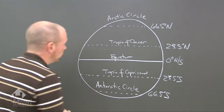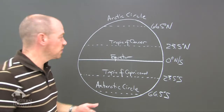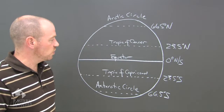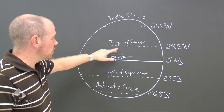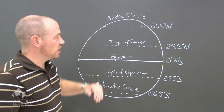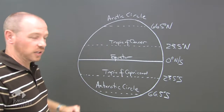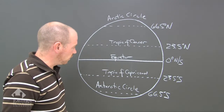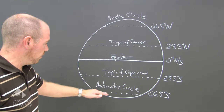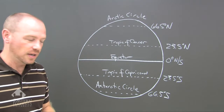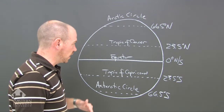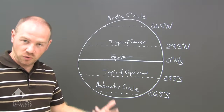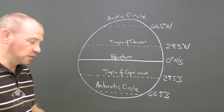So again, we have the five major parallels: the equator at zero degrees north and south; 23.5 degrees north is the Tropic of Cancer; 66.5 degrees north is the Arctic Circle. On the southern hemisphere side, we have the Tropic of Capricorn at 23.5 degrees south, and the Antarctic Circle at 66.5 degrees south. Five major parallels drawn to show the Earth-Sun relationship even further.